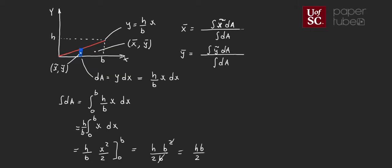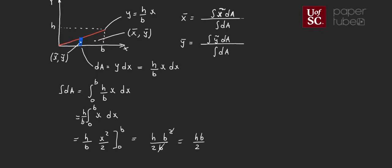Evaluating from 0 to b gives us H·b²/(2b), which equals H·b/2. That is exactly the area of the triangle — base times height over 2 — confirming our differential of area is correct. Next, let's calculate the numerator of X̄, which is the integral of x̃ dA.